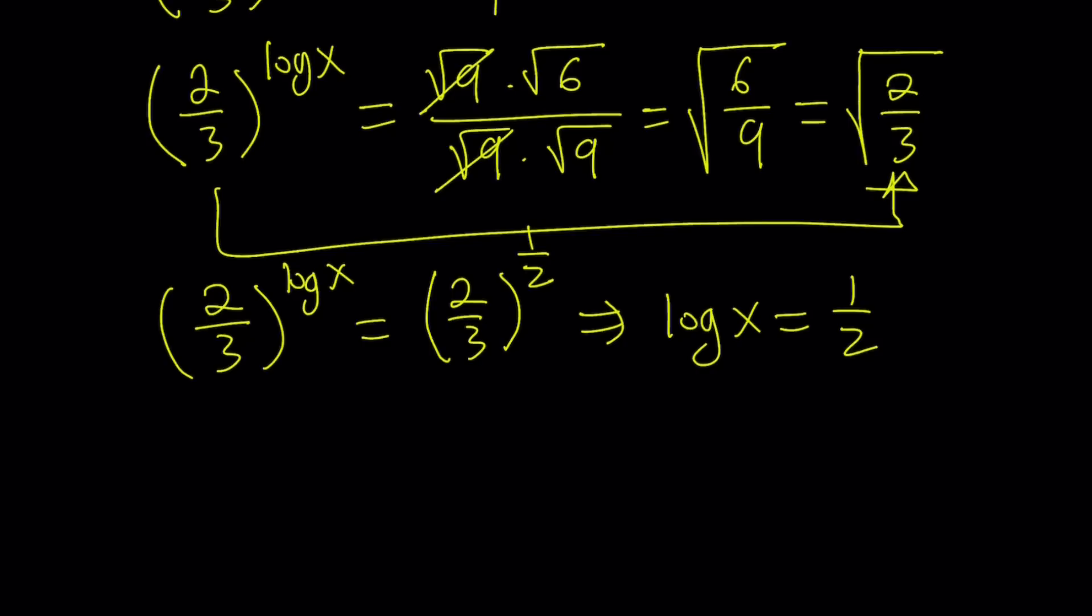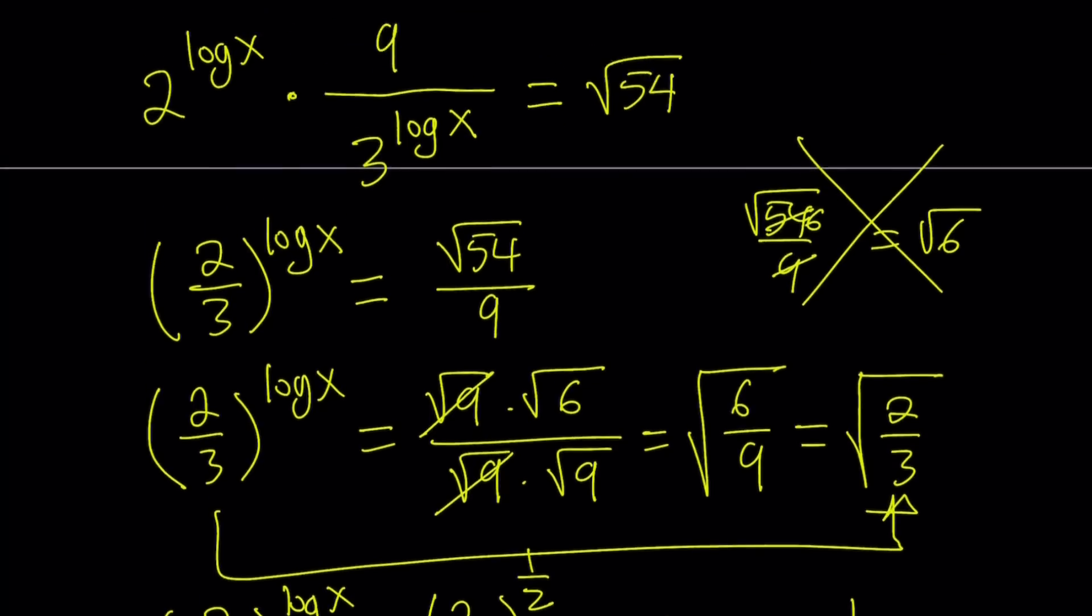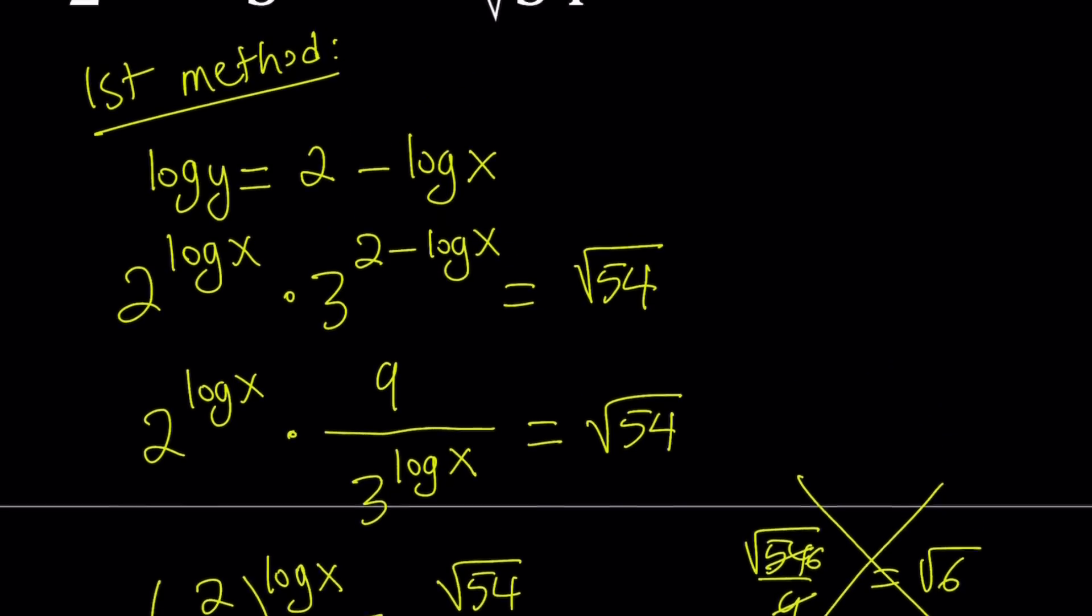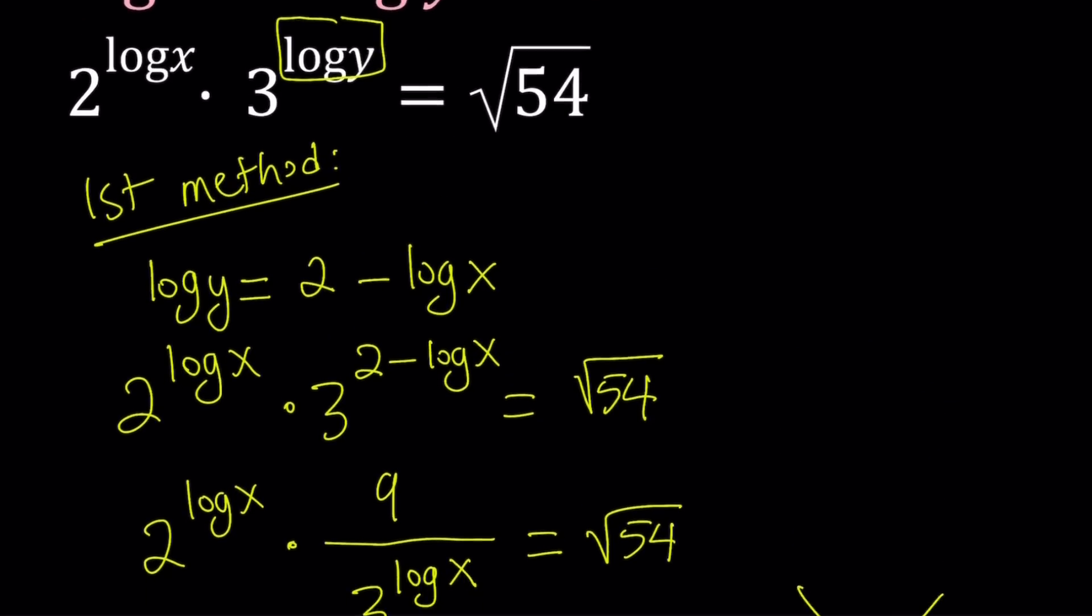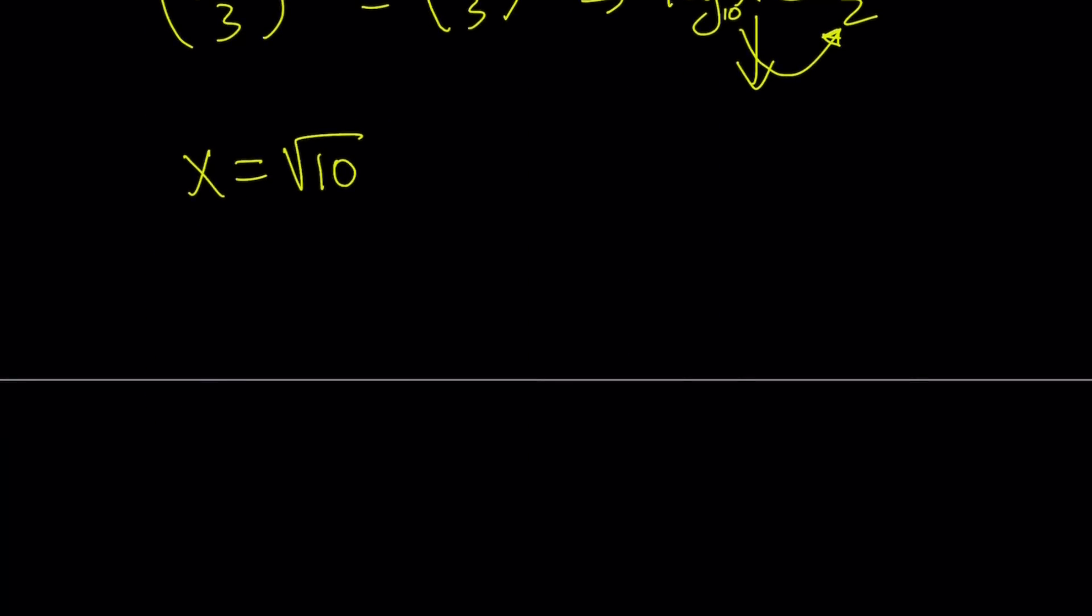And that indicates that x is equal to—since the base is 10 here, even though it's not written—and by using the definition of logs, you can safely say that x equals 10 to the power 1 half, which means square root of 10. And when you plug in log x into the first equation, which tells us log x plus log y is equal to 2, or you can use log y equals 2 minus log x, so log y is going to be 2 minus 1 half, which is 3 halves.